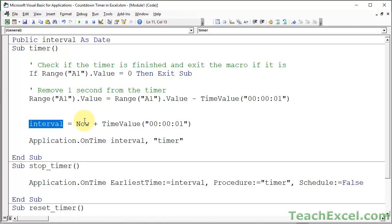VBA has a great function called now, which is the current time. So to get one second ahead of right now, just add one second using the same format that we used for the previous line. Time value with one second.